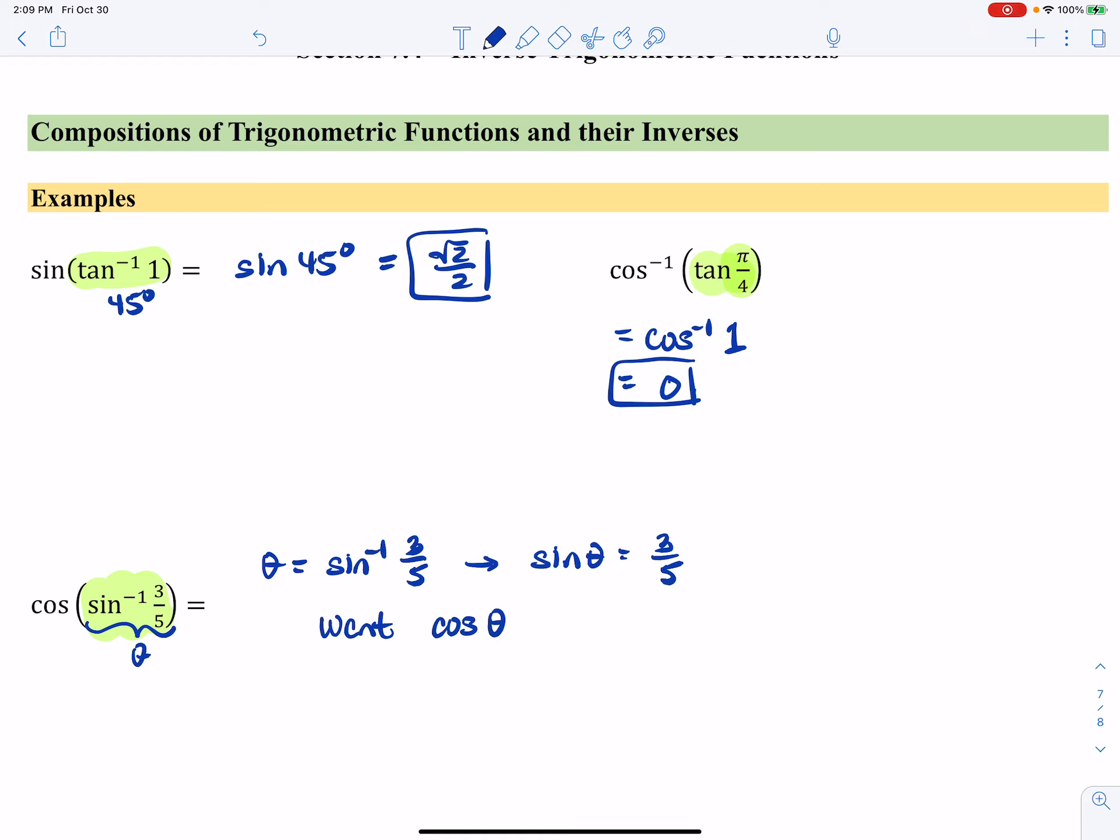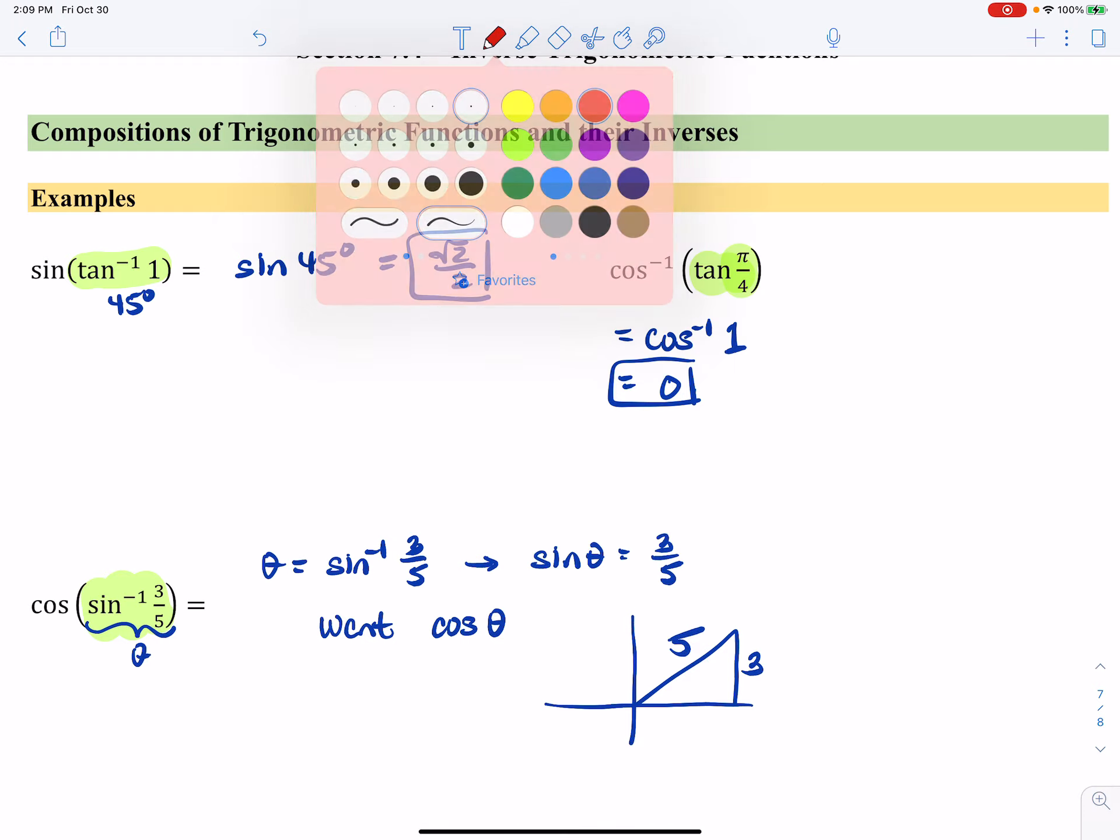Realize that this is actually a more complicated version of a problem we've solved in the past. If I know that sine of theta is 3 fifths, well, that means that the opposite side is 3, the hypotenuse is 5, which means the adjacent side is 4. So that means cosine of theta, if that's my angle theta, is 4 fifths.